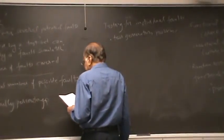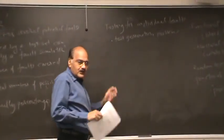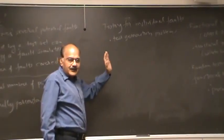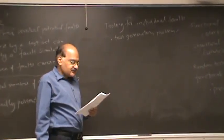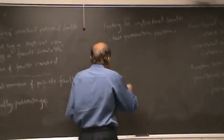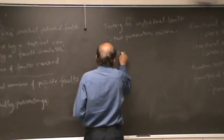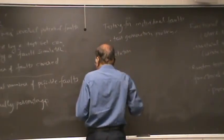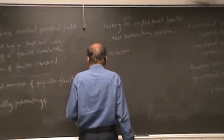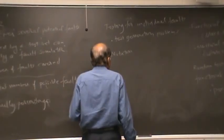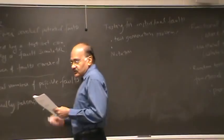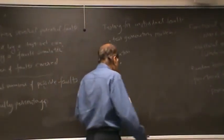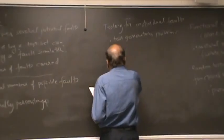And so basically, we are applying some inputs and observing some outputs. How do we find test for a given fault? Now we are going to use a notation. And notice that test generation is going to require two things. You need to excite the fault.